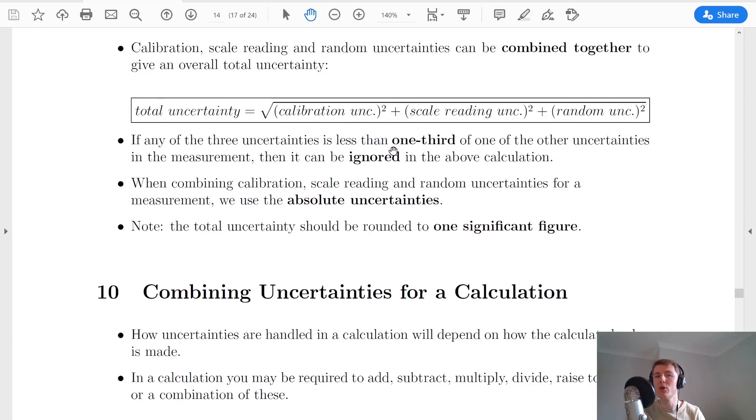There's one key rule that we need to be aware of when we're using this calculation. If any of the three uncertainties is less than one third of one of the other uncertainties in the measurement, or the biggest uncertainty, then it can be ignored in the above calculation.